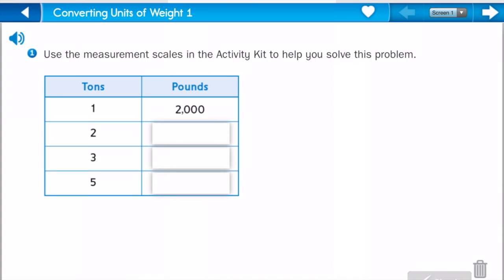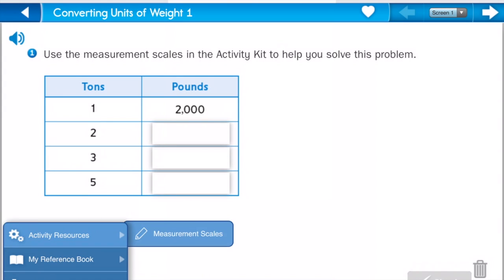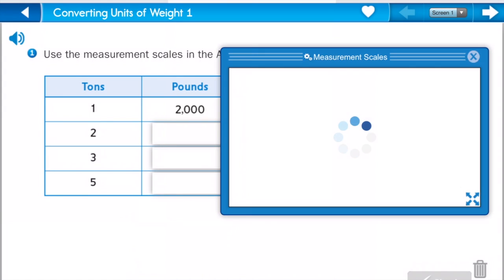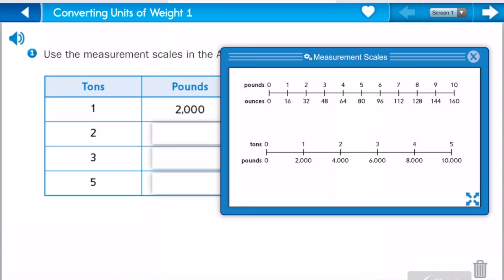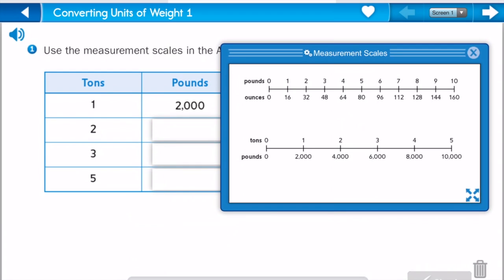So what we're going to do is we're going to pull up our measurement scales, and we're going to look at the second one, which is the tons and the pounds. We see that one ton equals 2,000 pounds.